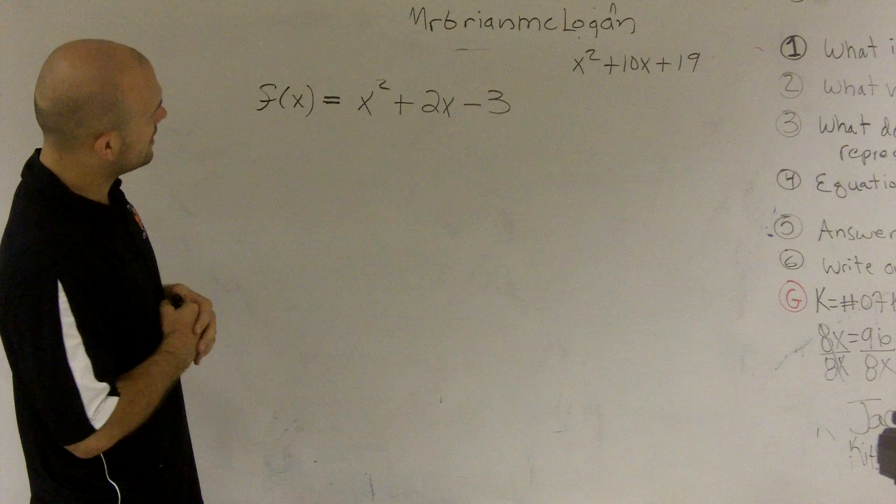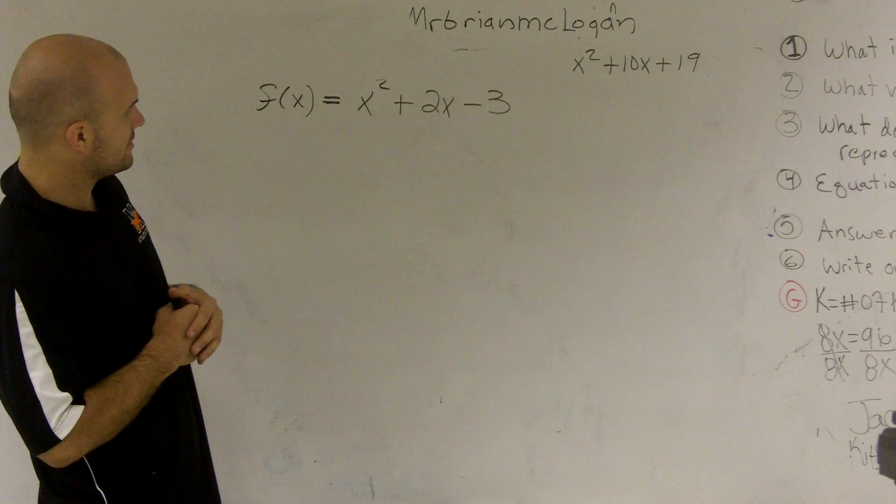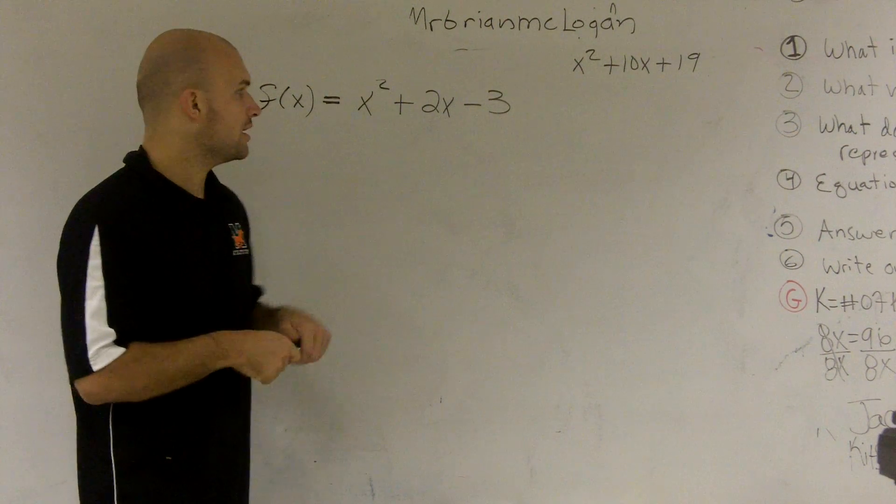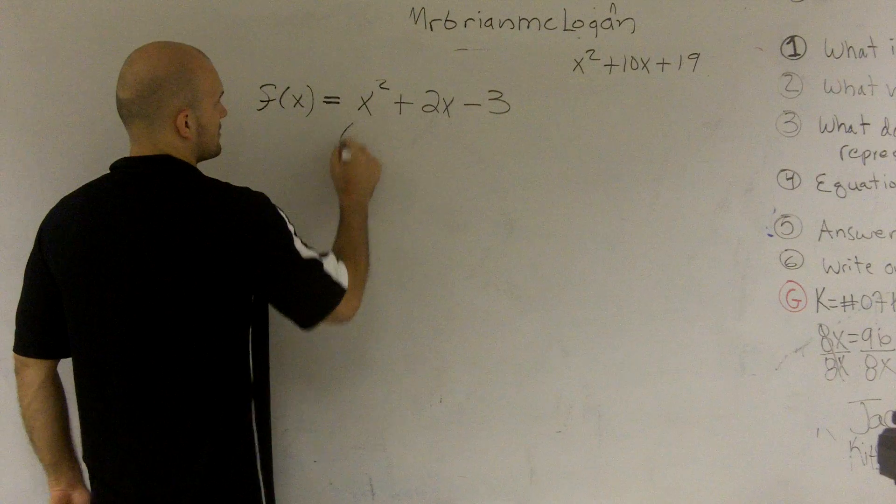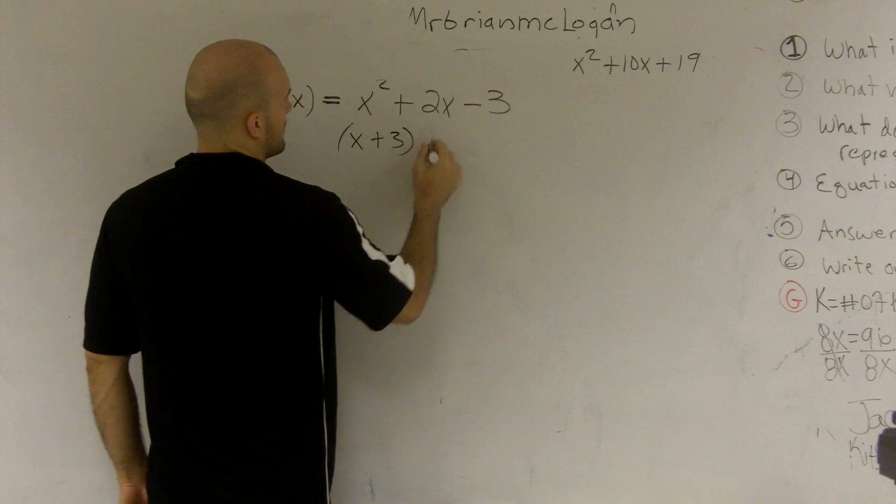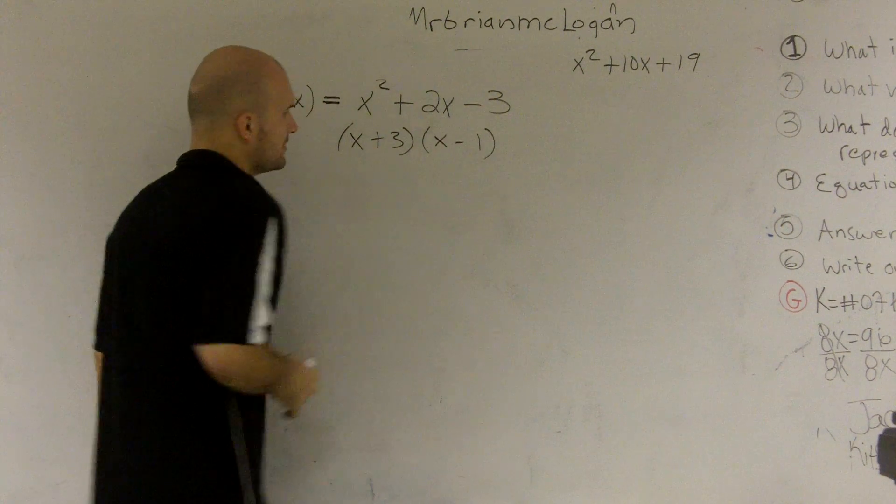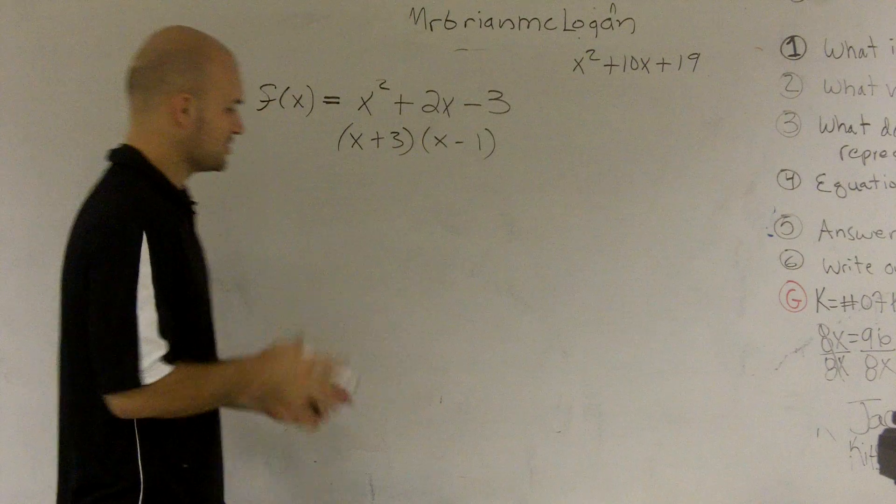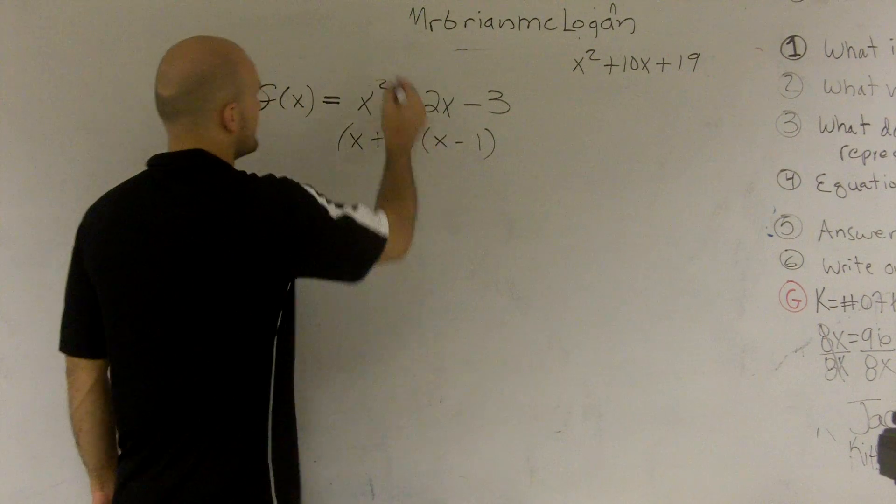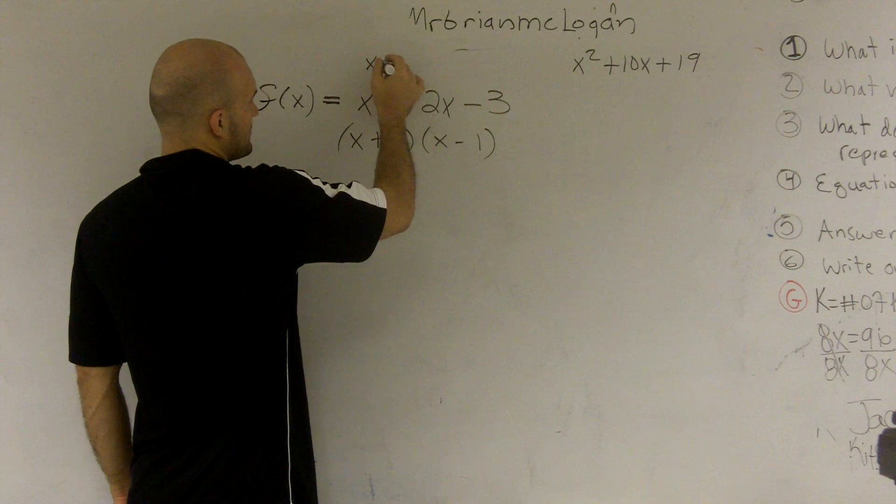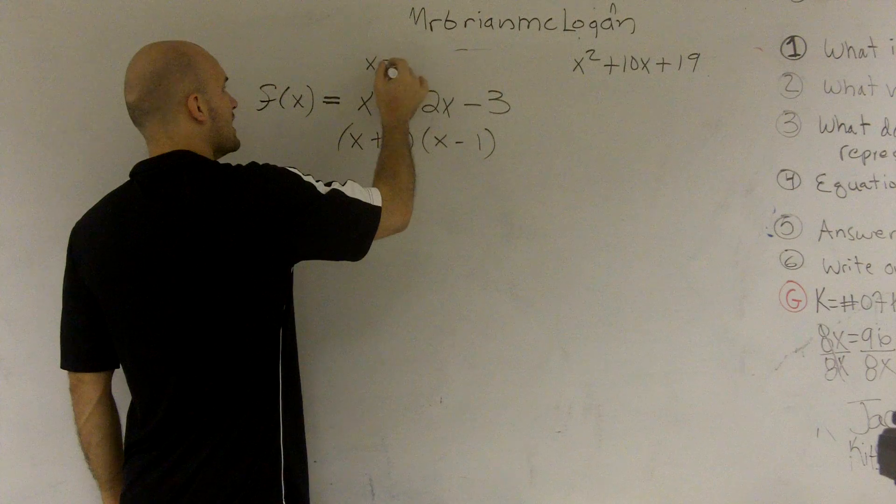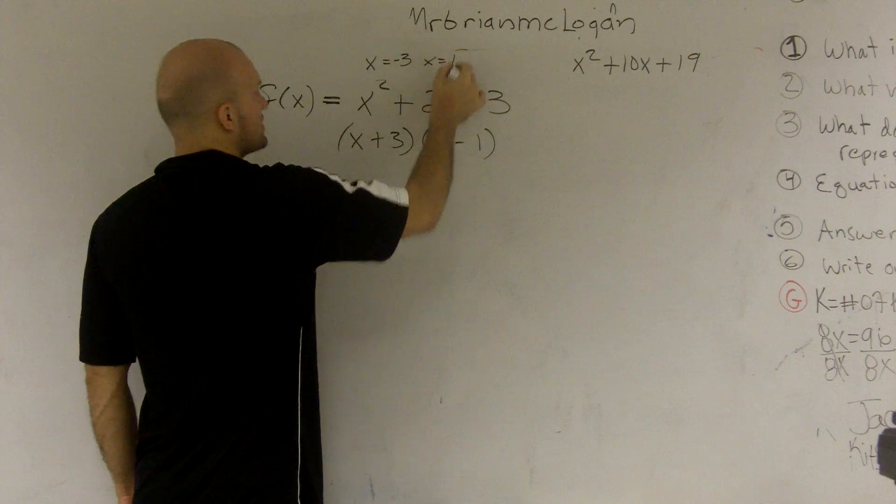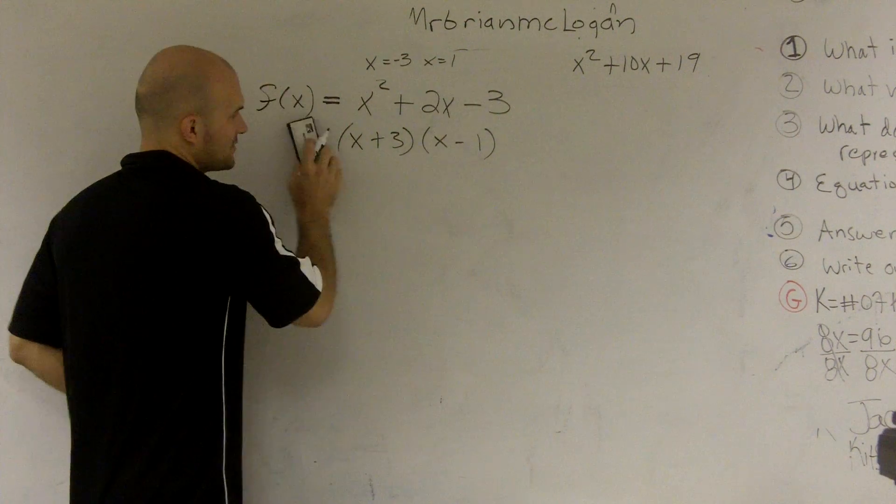So this problem actually looks like it can be factored. If I was going to factor this, right, this could be easily factored, but I'm going to show you completing the square so you can see that I'm still going to get the same answers. So x equals negative 3 and x equals 1.